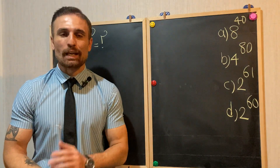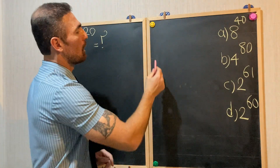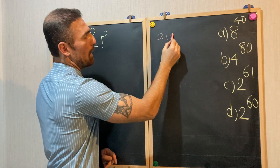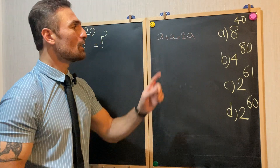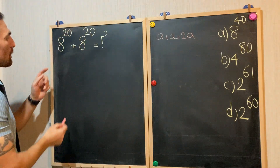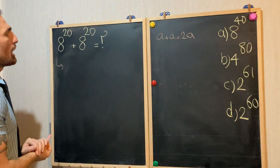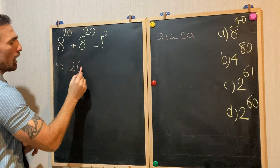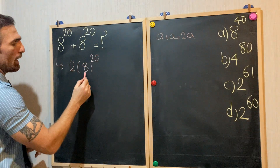To solve this question we need to use some rules. The first rule we are going to use is a plus a equals 2a. These are very simple rules. Therefore we can rewrite it: 8 to the power of 20 plus 8 to the power of 20 equals 2 times 8 to the power of 20.